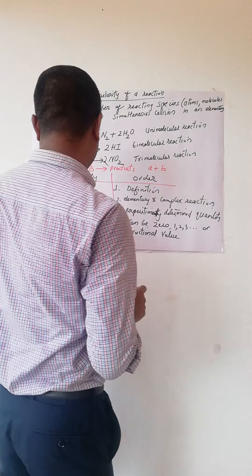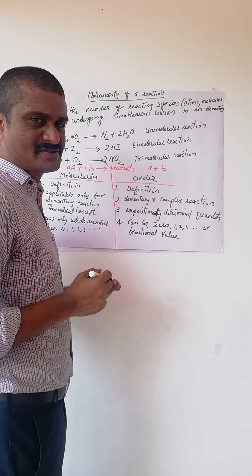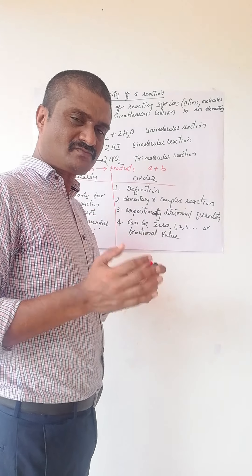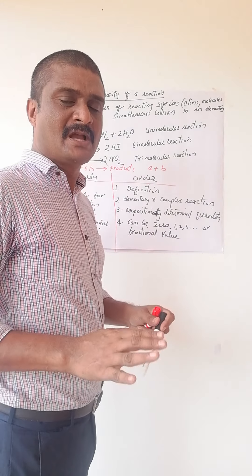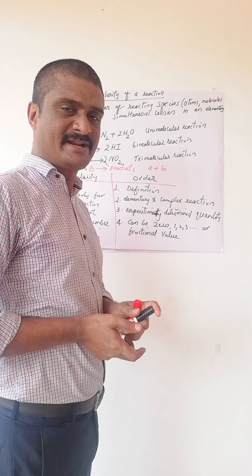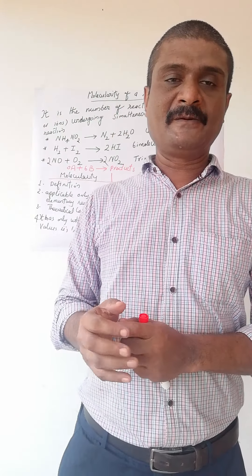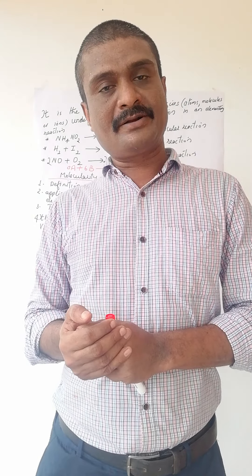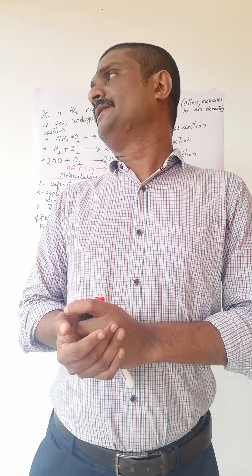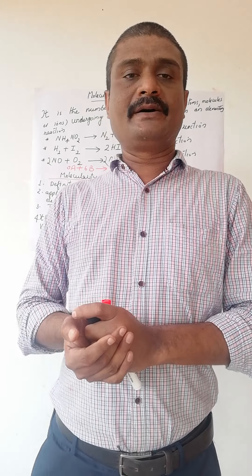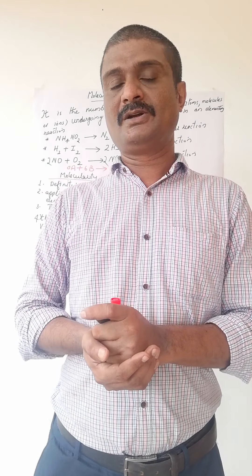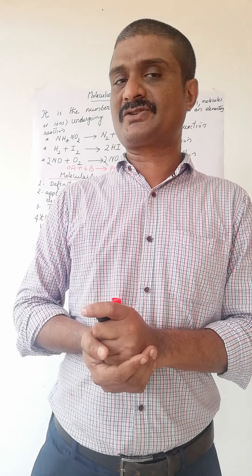One more difference: order of a reaction gives some idea about the reaction mechanism, but molecularity gives no idea about the reaction mechanism. This is the main difference between order and molecularity of a reaction. In the next video I will explain the rate constant, its characteristics, and its units.